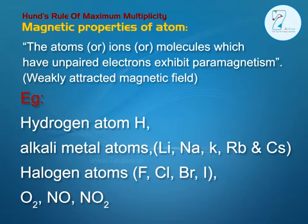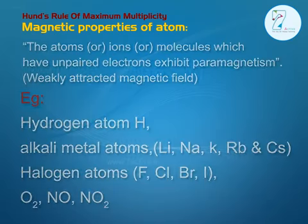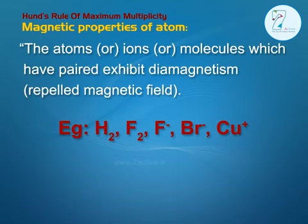Bromine, Iodine, Oxygen, and O2. Atoms, ions, or molecules in which all electron spins are paired exhibit diamagnetism — repelled by a magnetic field. Examples: H2, F2, F-, B-, Cu-.